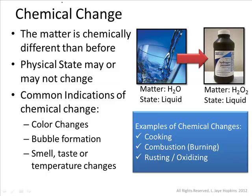So, physical changes always involve a substance changing physical state, but the matter itself doesn't change — H2O as a liquid is still H2O as a gas or as a solid. Chemical changes, on the other hand, take a type of matter and change it fundamentally, so that you have an actual different type of matter when it's done. Examples of chemical changes are cooking, combustion, rusting, or anything where you see color changes, bubble forming, or other indications that something has changed at the chemical level.